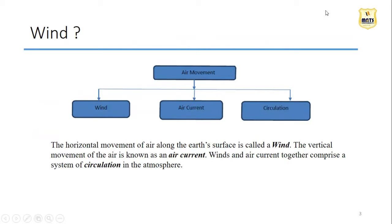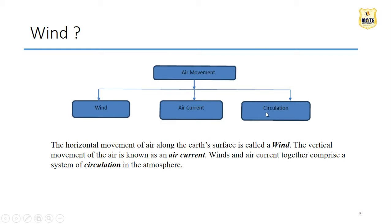Wind - in Hindi we say 'Hawa.' Wind is generally a movement of air, and it can be of three types. First is wind, which means the horizontal movement of air. Second is air current, which means the vertical movement of air. Third is circulation, which is when horizontal and vertical movement combines together. So there are three categories of air movement: wind, air current, and circulation.